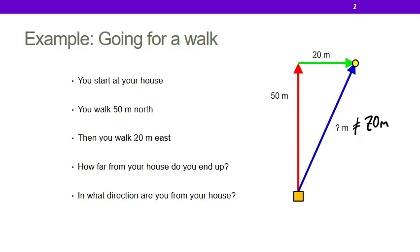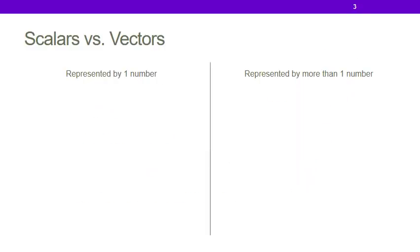Vectors are a mathematical construct that let us describe things that have both a length and a direction. Up to this point in your life, you've learned all sorts of math and you learned how to do math with things that could be represented by one number. We call those things scalars.